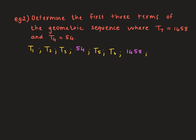We want to set up something similar to example 1, but now thinking about what we know regarding geometric sequences. Term 1 is A, term 2 is A times the constant ratio, term 3 is A times the constant ratio squared, term 4 is A times the constant ratio cubed. The number in the exponent is one less than the position of the term.